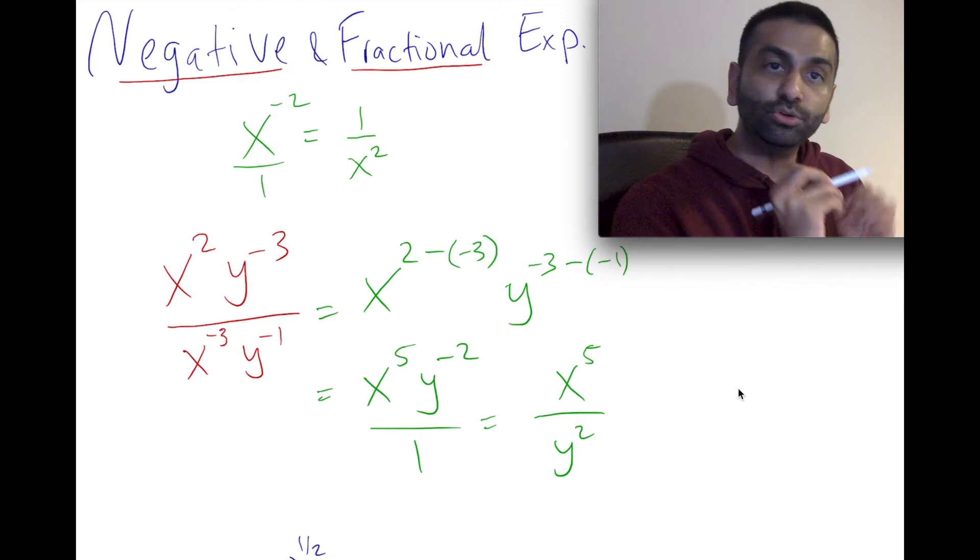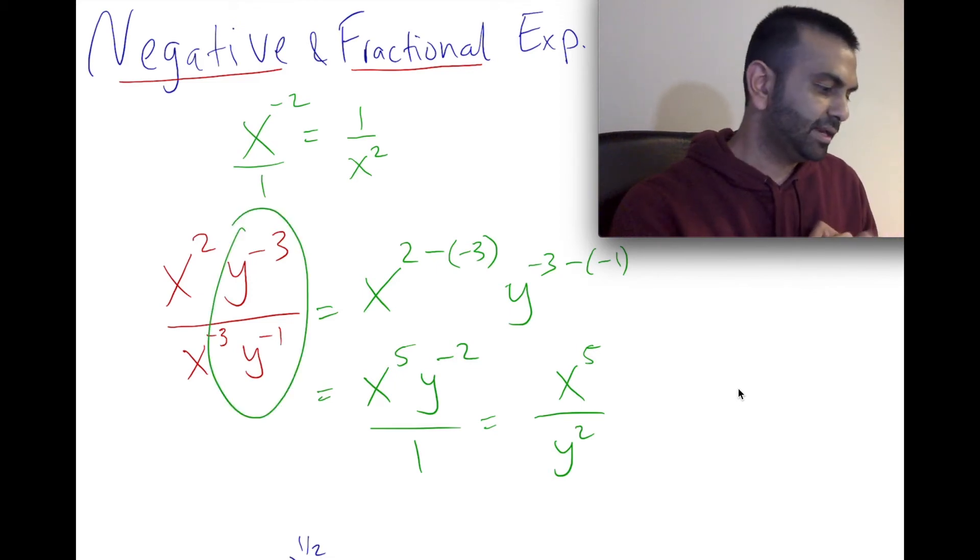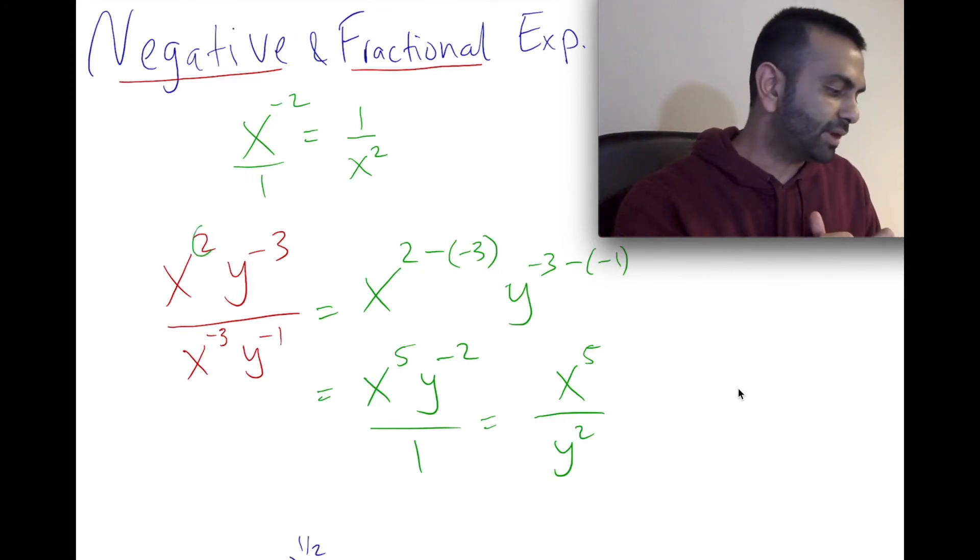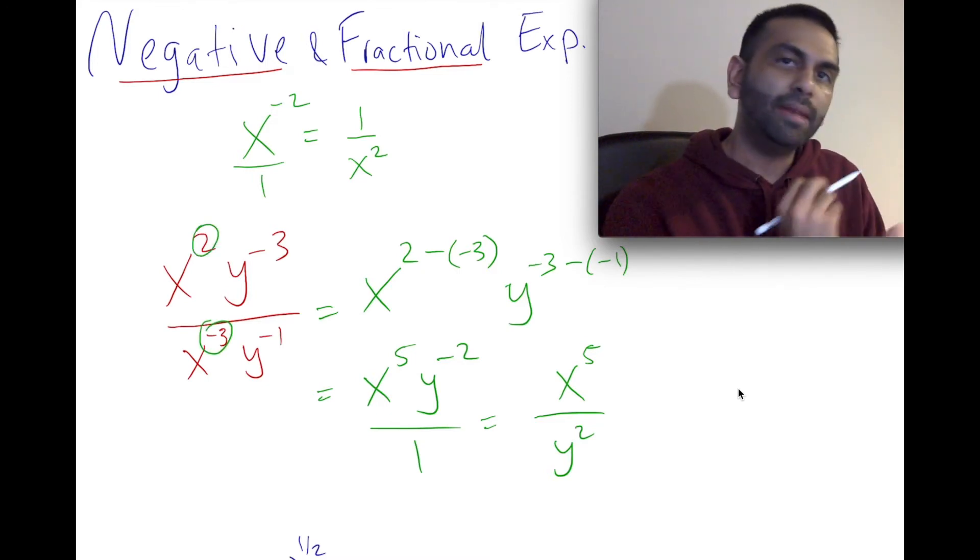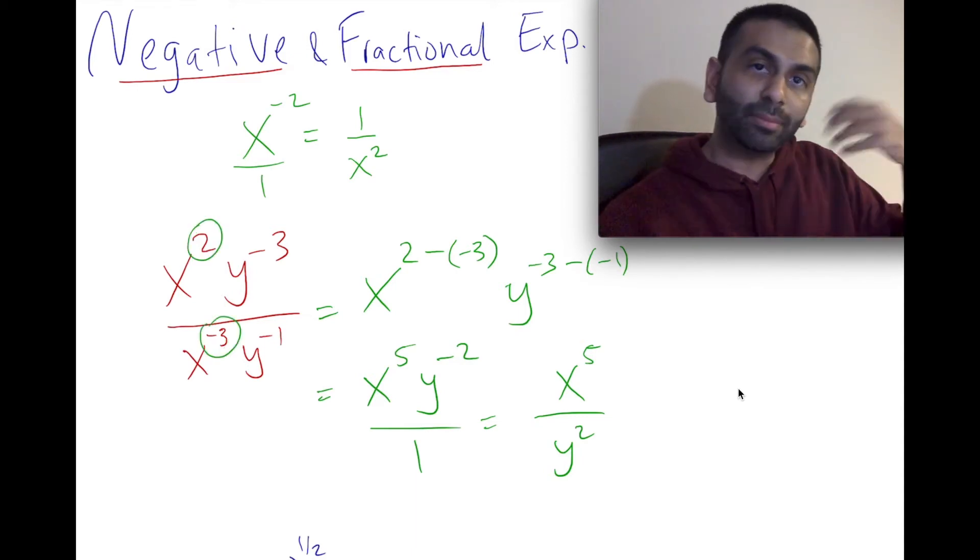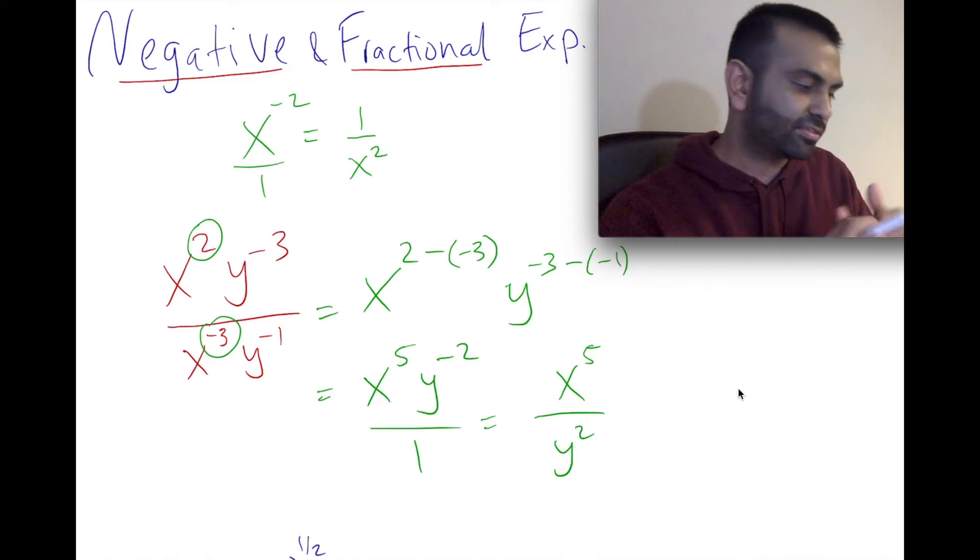Now here, another thing you could have done is whenever I subtract, you always want to take the larger of the 2 and minus the lower of the 2 on its side. So here, you could have said 2 is bigger than negative 3, so I'm going to do 2 minus negative 3 and get the 5, and then you would have ended up there.